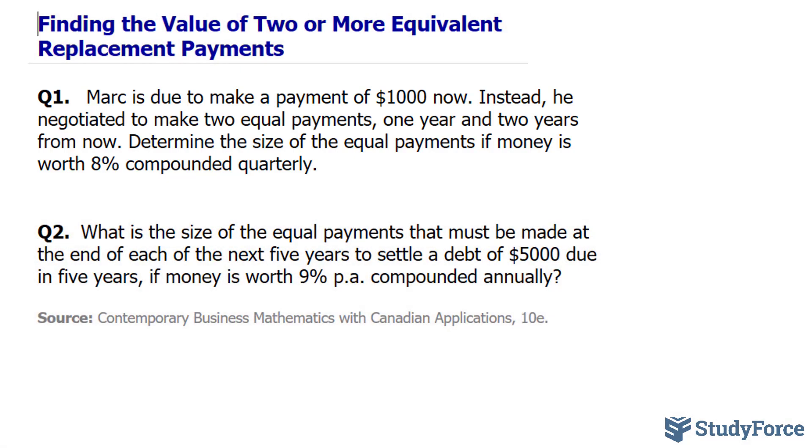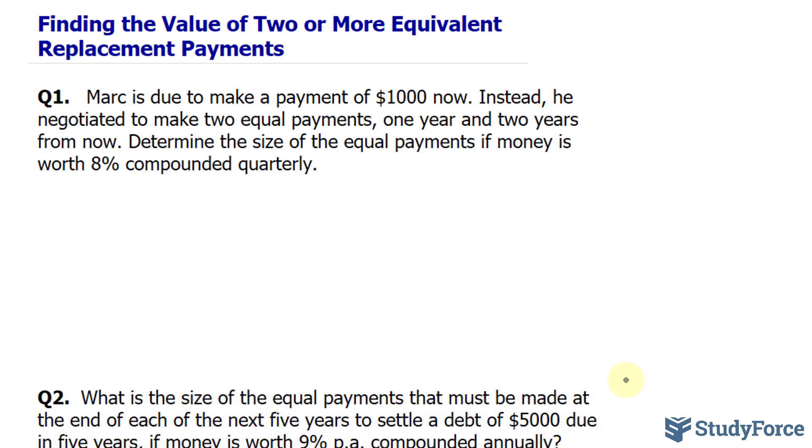Before I start showing you how to answer this, let's begin with a very important formula known as the future value formula, and it looks like this: FV = PV(1+i)^n, where n represents the number of compounding periods.